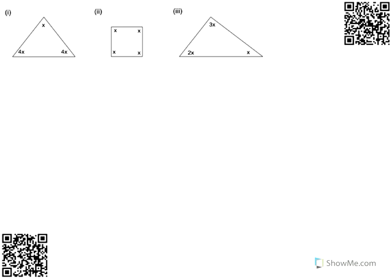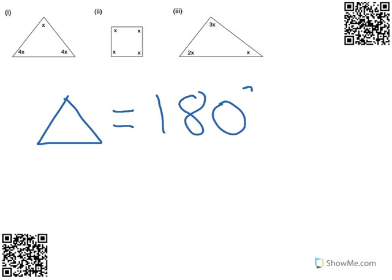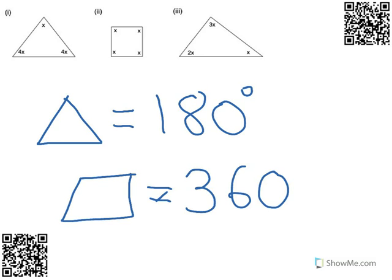This lesson will show you how to form and solve equations from angles and shapes. Before we start this, you need to know two facts. Any triangle is 180 degrees and any four-sided shape equals 360 degrees. You need to know these two facts for all of the questions to follow.